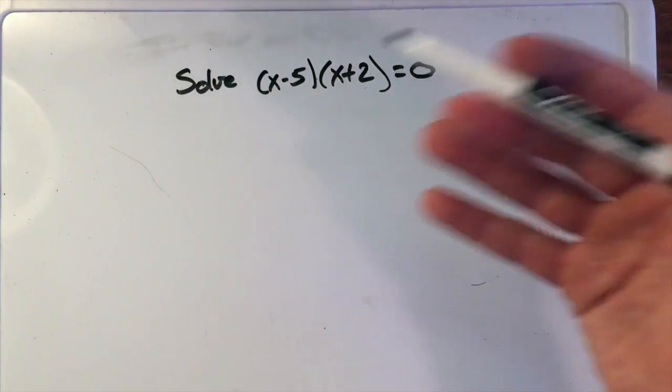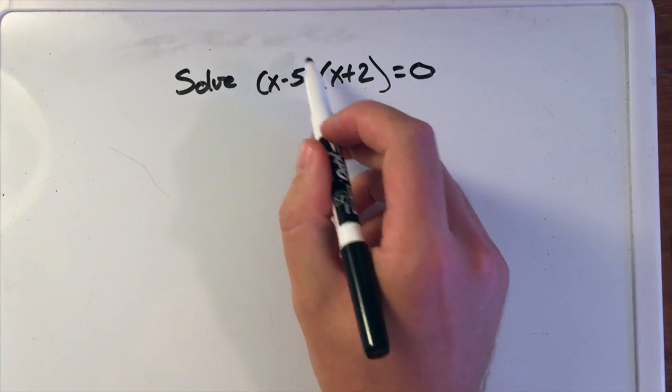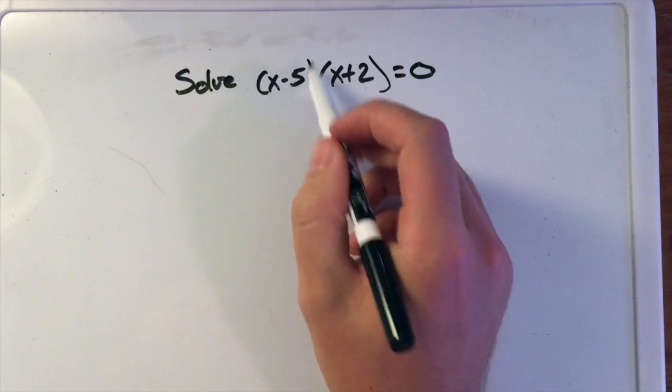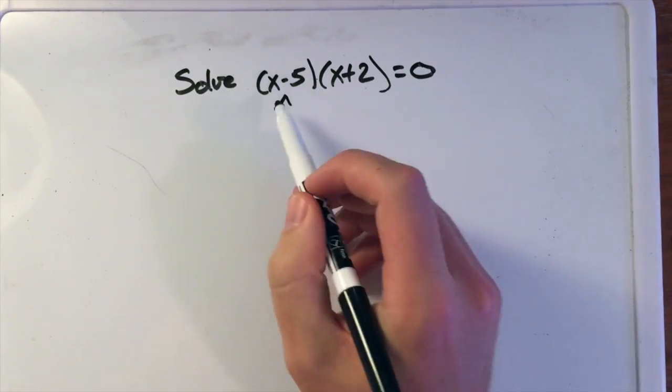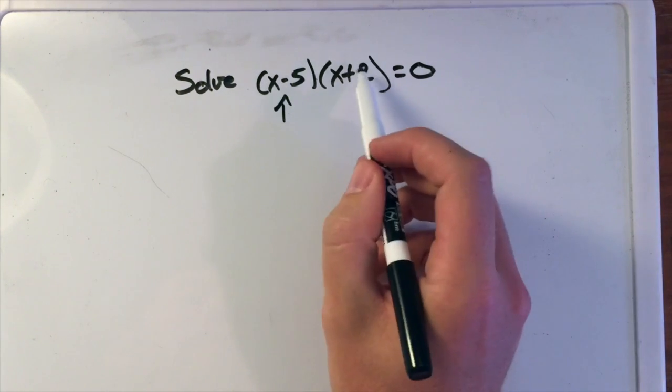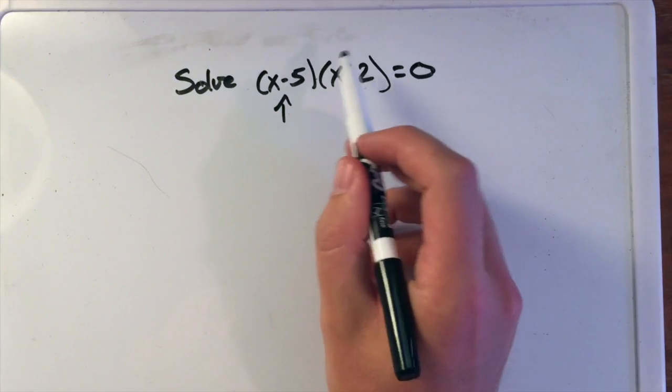So how can we solve this equation when it's equal to 0? Well, one thing we want to take note is if this part, this section, the first one here, if this whole thing equals 0, then we multiply it by this and that equals 0, right? Because any number or anything multiplied by 0 is equal to 0, we then have a solution.